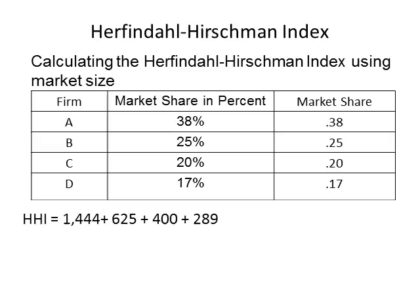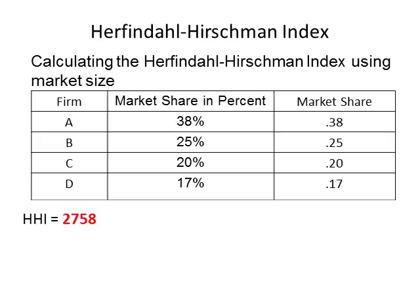Next, add the results of the squaring together. Adding 1,444 to 625 gives 2,069. Adding 2,069 to 400 gives 2,469. Finally, adding 2,469 to 289 gives 2,758.